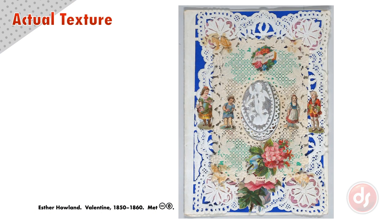Esther Howland was a Victorian entrepreneur who built a successful business making handcrafted Valentine's Day cards. Her cards, which are credited for popularizing Valentine's Day in America, were made with collage materials like metal leaf paper, die-cut lace, and lithographic prints, giving them an actual texture. These handheld artworks would have engaged the viewer's sense of touch along with the visual perceptions of the imagery, engaging multiple parts of the brain. Having actual texture the viewer interacts with creates a new sensory experience for the artwork. But even if we can't touch the actual texture, merely observing it will activate a similar sensation in our mind.